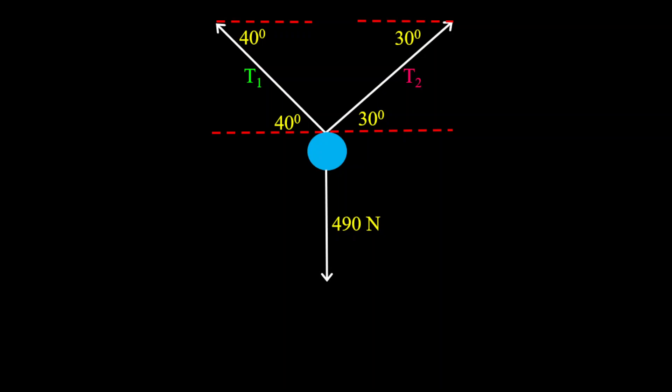So for T1 x component, which is in a negative direction, it is negative T1 cos 40 degrees. That of T2 is T2 cos 30 degrees. For the y component of T1, it is T1 sin 40 degrees and then that of T2 it is T2 sin 30 degrees.